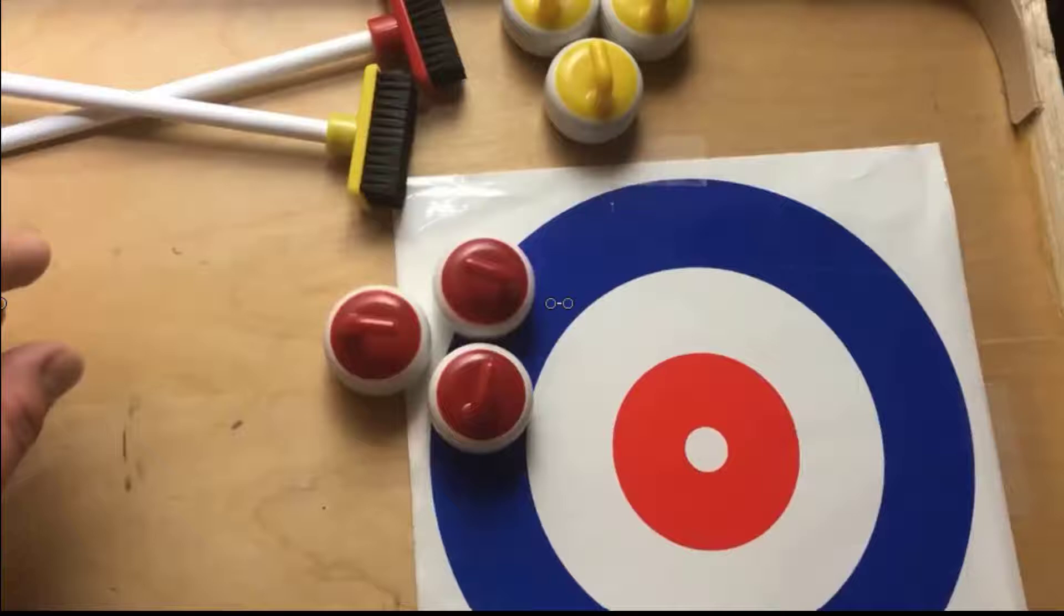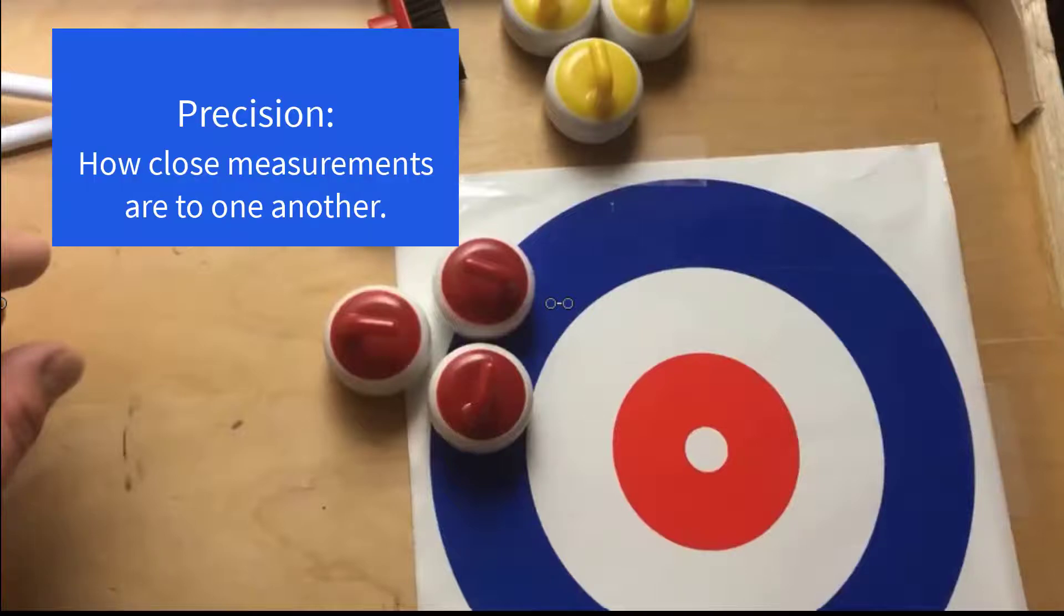For this reason, measurements that are close to one another can be very important for scientists. These measurements, in fact, are so important that we give them a special name: precision. Precision refers to how close the agreement is between repeated measurements.